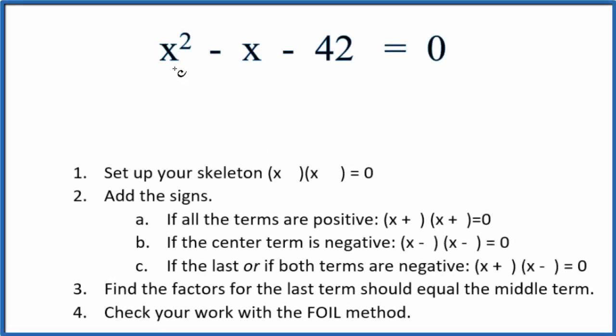In this video we'll factor the equation x² - x - 42 = 0 and we'll use these steps to help us. The first step is to set up a skeleton equation that'll look like this.